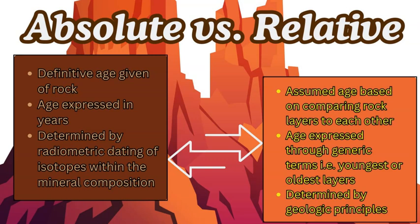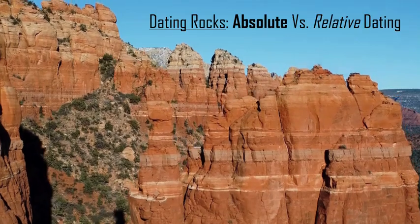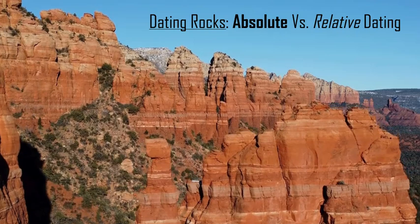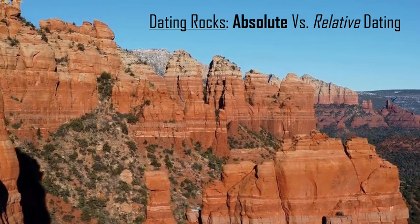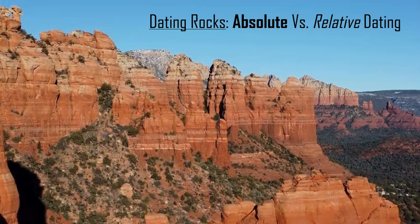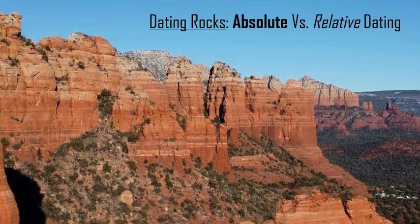We can also use paleomagnetism to figure out the age of the rock based on the Earth's polarity and the switching of the electromagnetic field, expressed in the alignment of the ferric elements within the minerals. For a given landscape or rock formation, combining both absolute and relative age dating gives you a more conclusive and scientific understanding of the age.